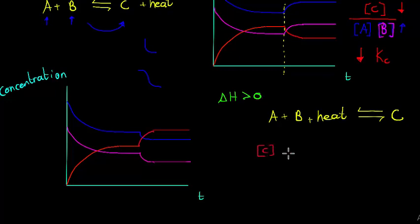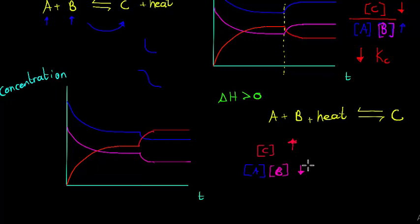For the KC value in an endothermic reaction: the concentration of the product C increased, while the concentrations of reactants A and B decreased. In the fraction KC = [C] / ([A][B]), increasing the numerator and decreasing the denominator increases the overall KC value. So the KC value increases with a temperature increase for an endothermic reaction. Don't memorize this — just work it out and you'll see it's not that difficult.